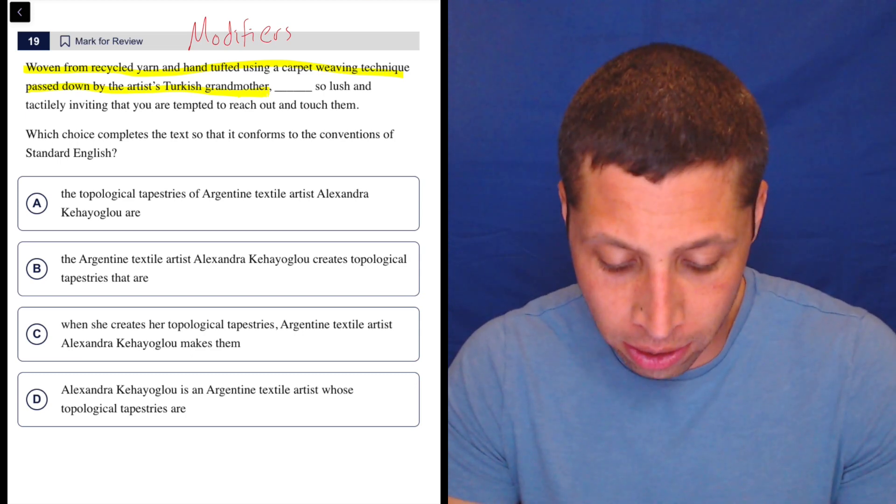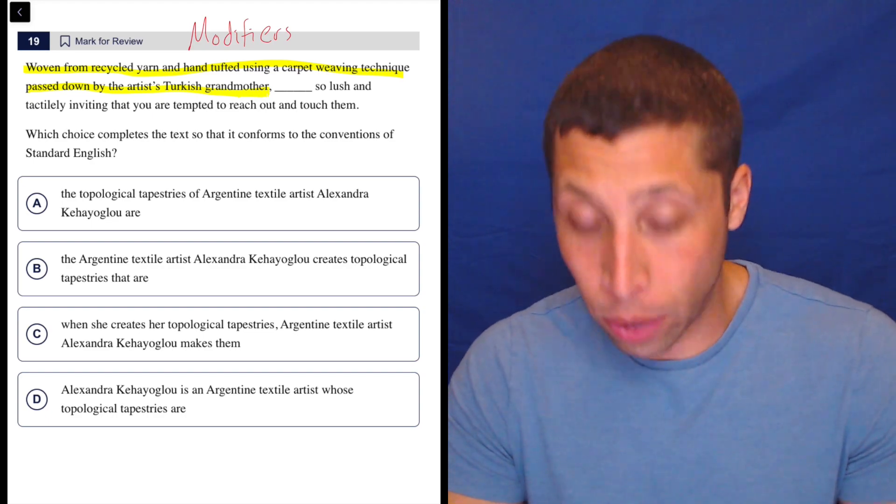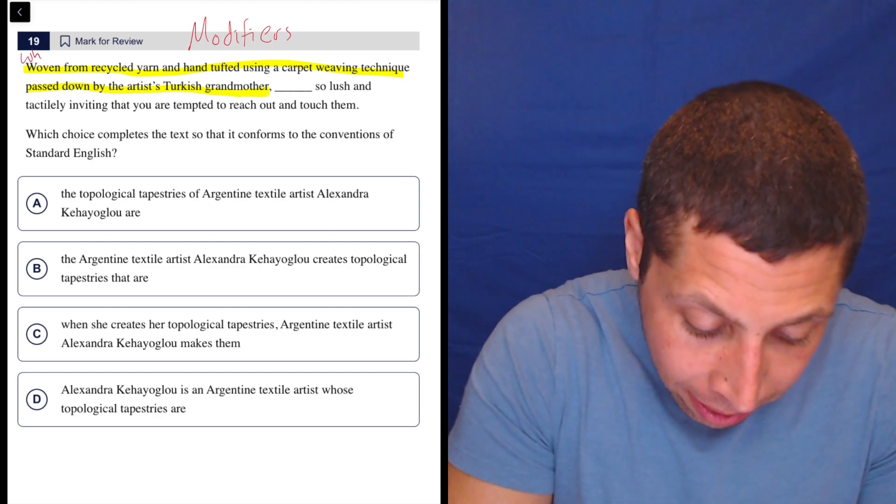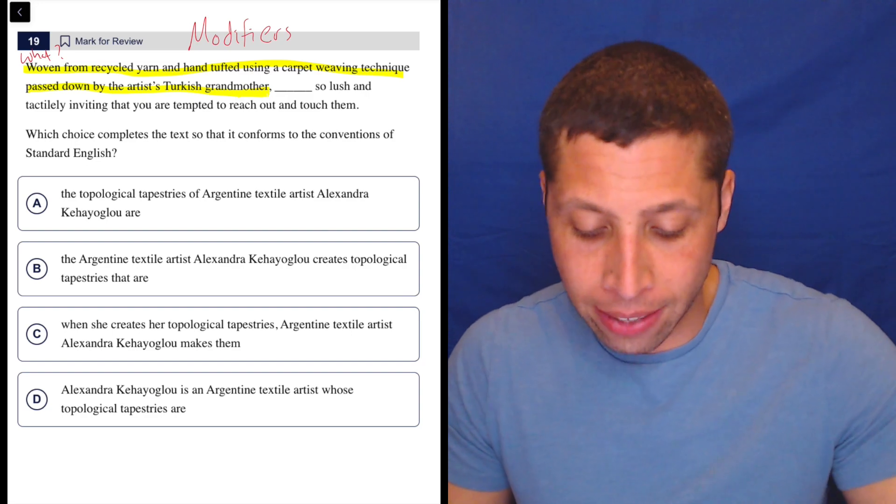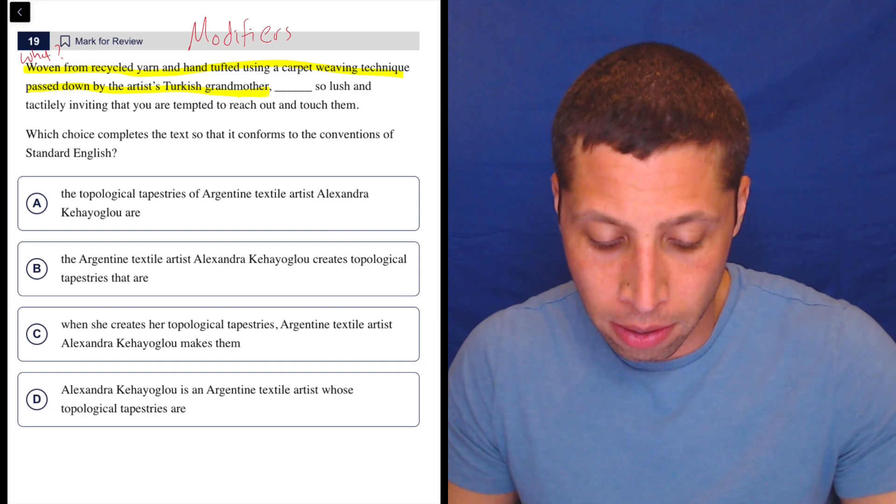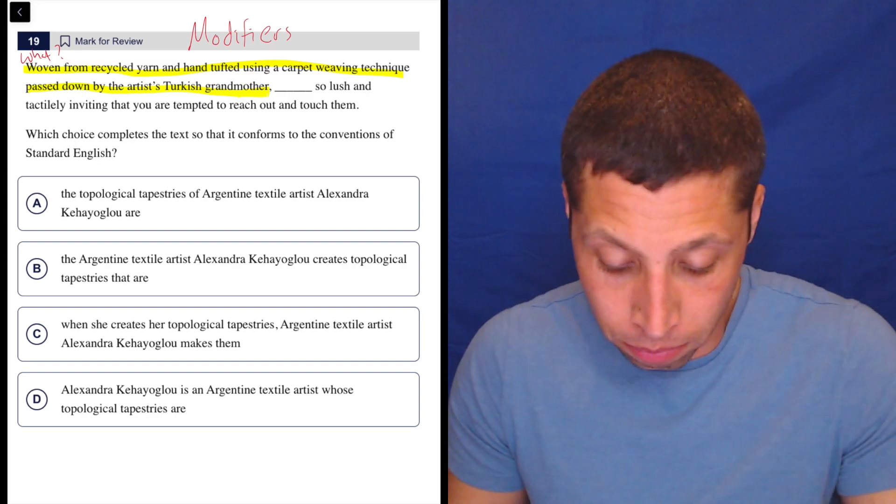Okay, so what is woven from recycled yarn and hand tufted using a carpet weaving technique? Well, probably some sort of rug or something.